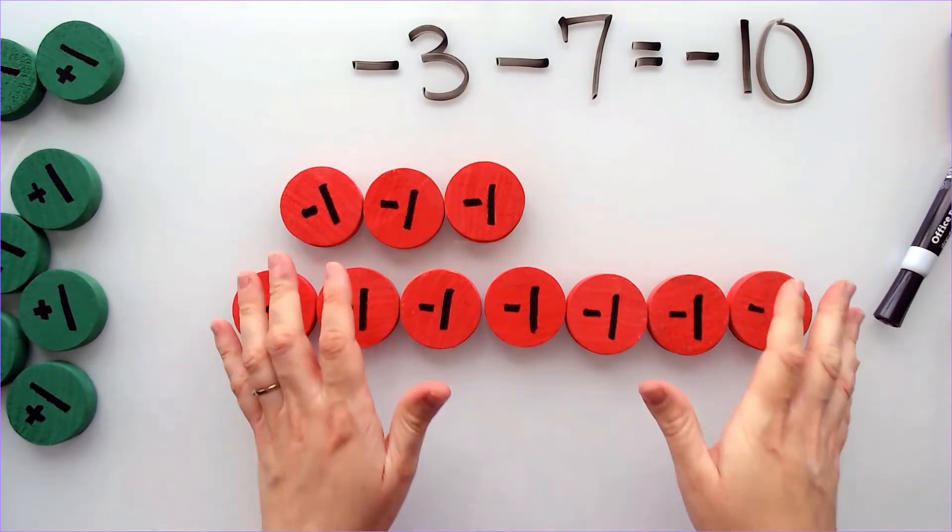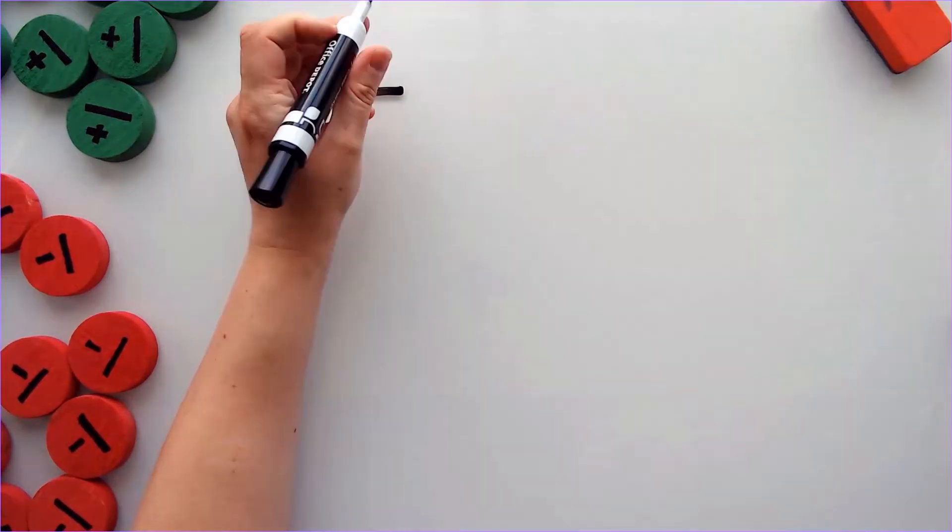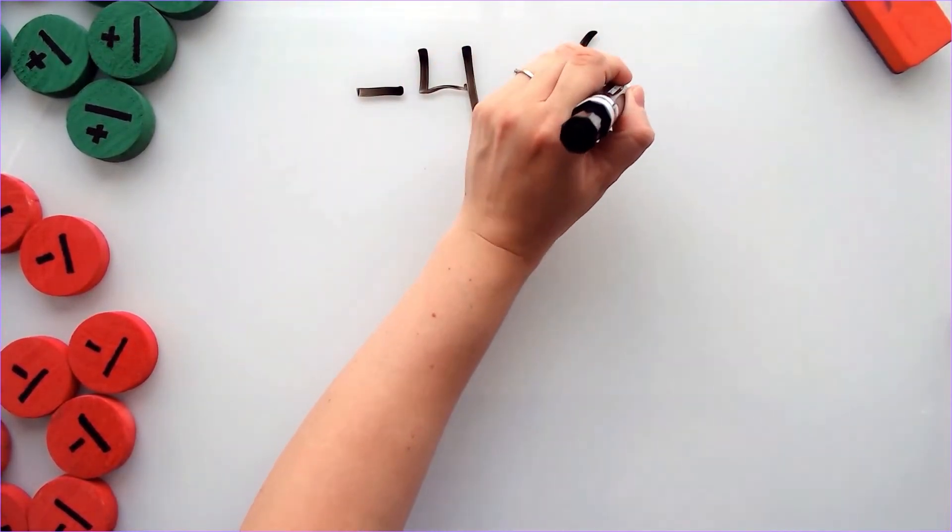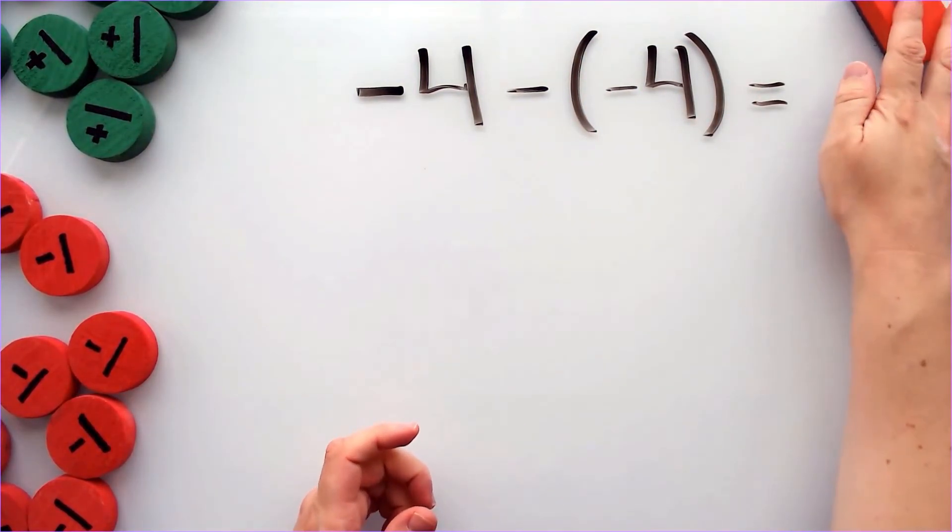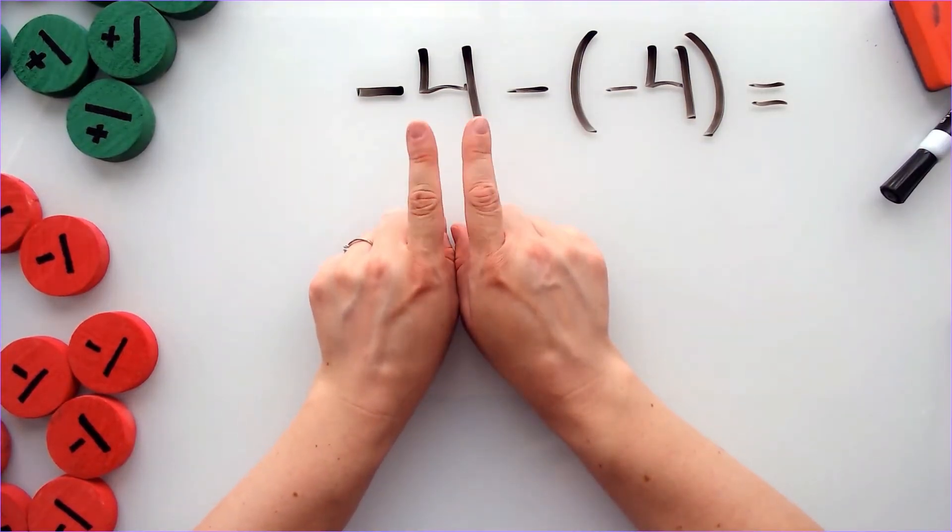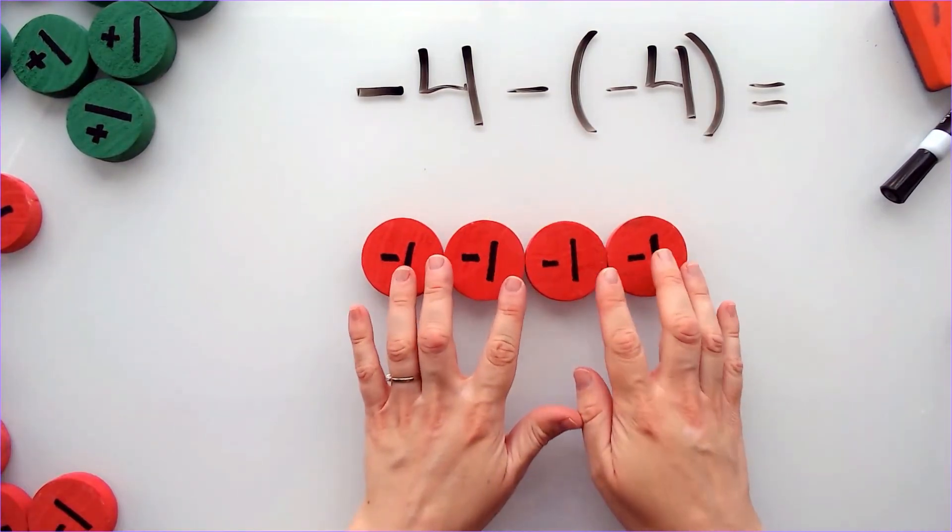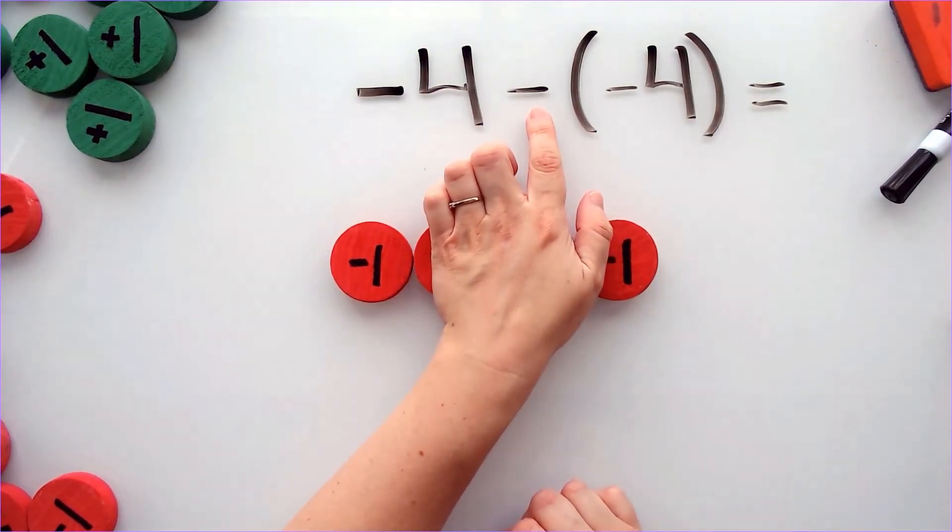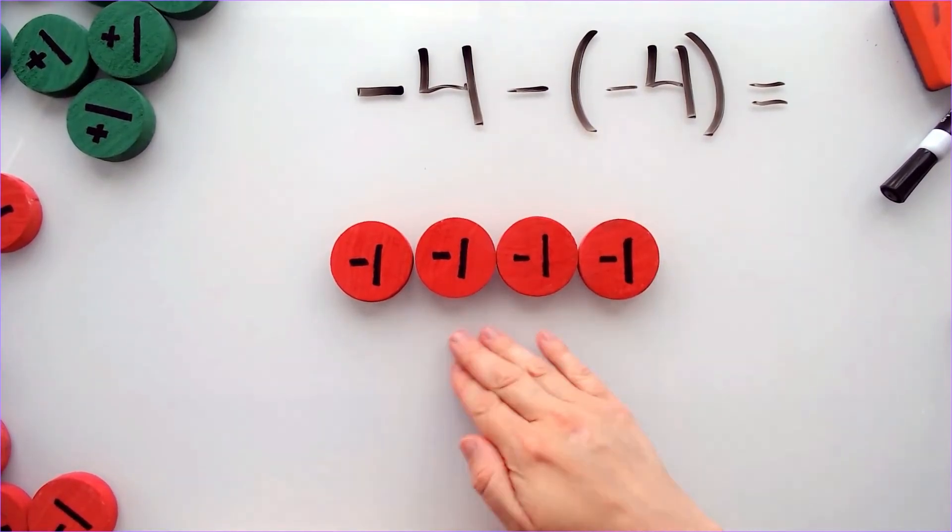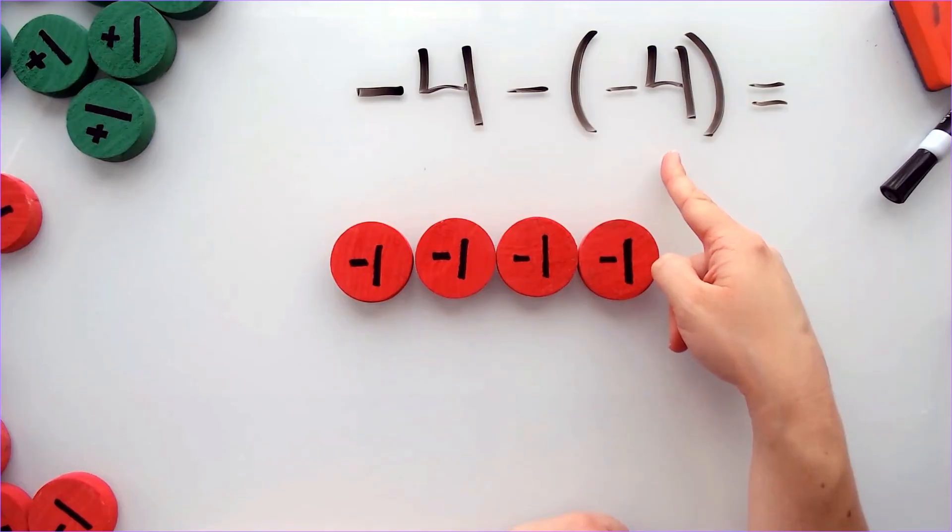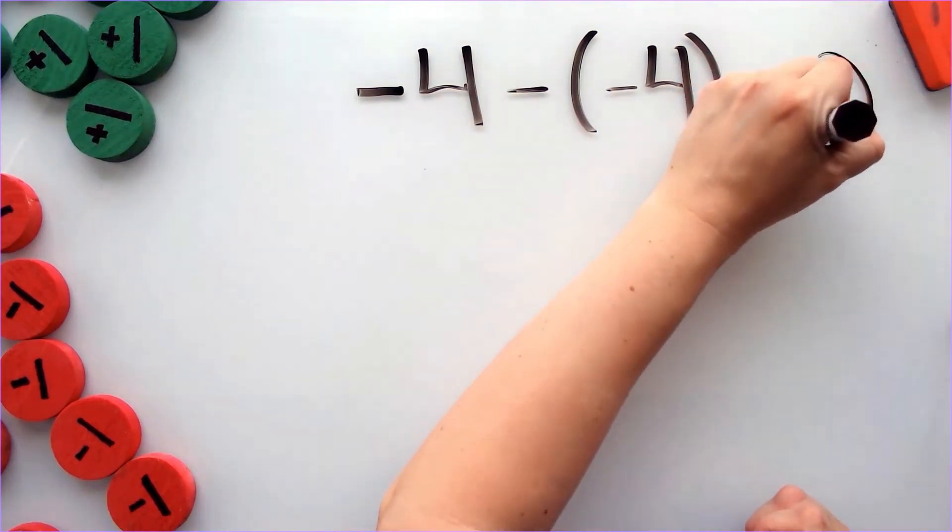Let's look at one more problem. Okay, now let's look at the problem negative 4 minus negative 4. And let's see what that equals. So what I'm going to do again is start with my first integer. My first integer is negative 4. So I'm going to bring over 4 negatives. And I need to take away 4 negatives. Well, that's pretty easy because I have 4 negatives. So I can take away negative 4. So that's 1, 2, 3, 4. That tells me that my answer is 0.